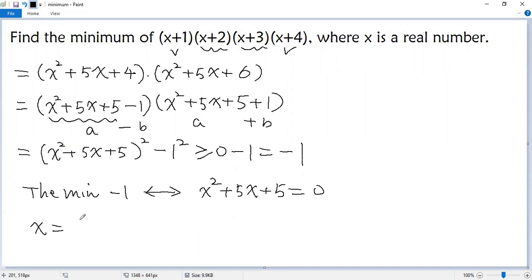So x equals negative b plus minus square root of b squared minus 4ac divided by 2 times a. So we see that would be negative 5 plus minus square root of 5 over 2.